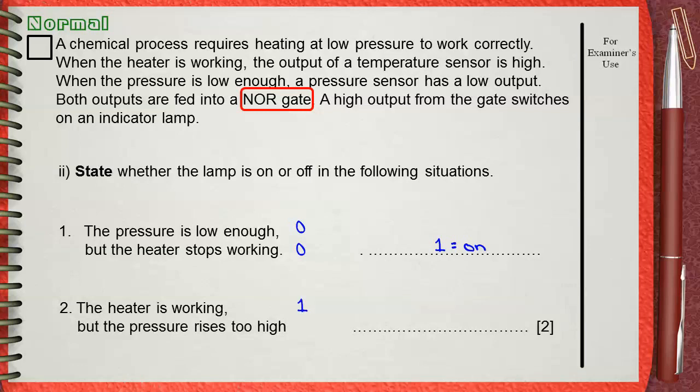When the pressure rises too high, the pressure sensor will also give one due to high pressure. When one and one are fed as two inputs to a NOR gate, the output of the NOR gate will be zero. This means that the indicator lamp will be off.